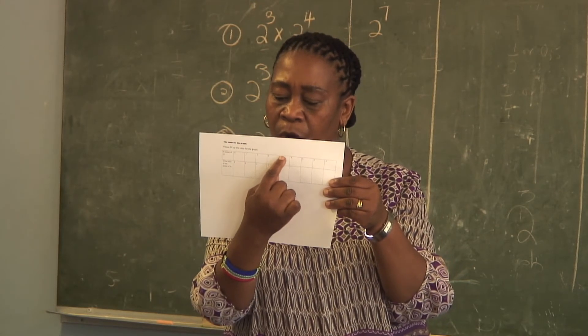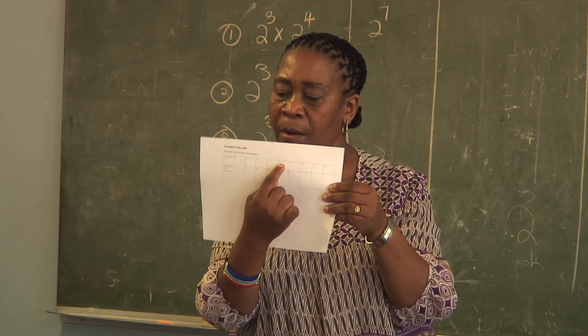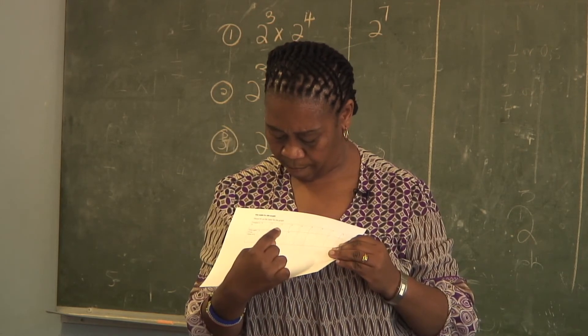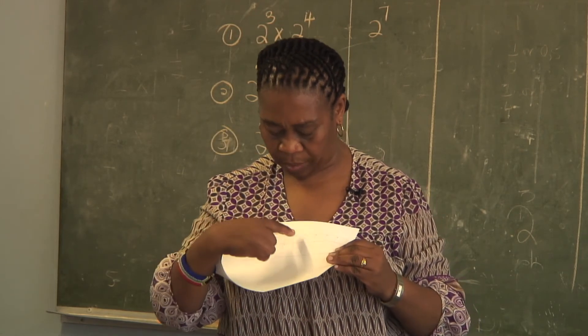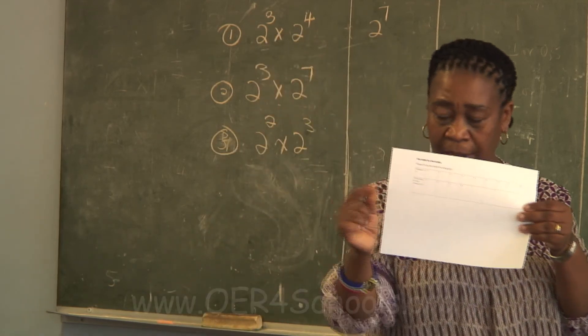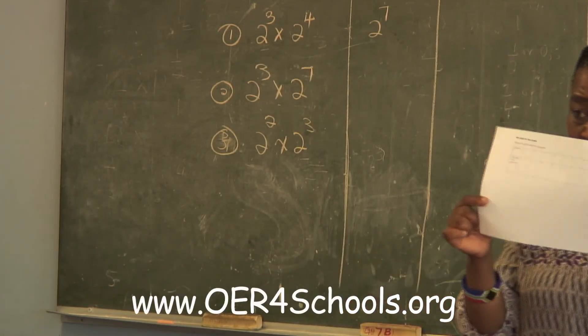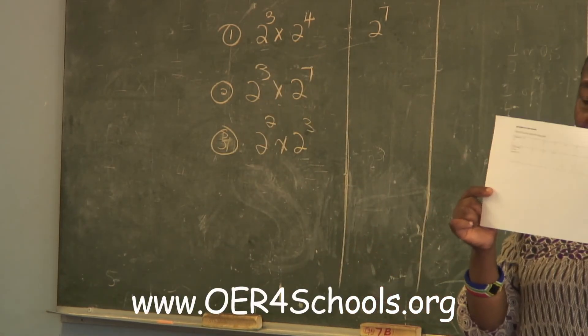Now just go ahead and fill in. 2 to the power 4 is equal to? 16. Fill in on the table — complete the table.